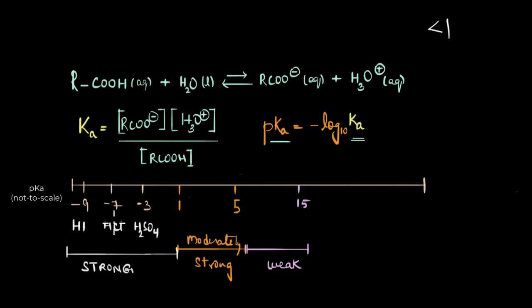HI has a pKa of minus 9, HCl has a pKa of minus 7, H2SO4 has minus 3. Basically minus 3 refers to the first dissociation or the loss of the first proton.